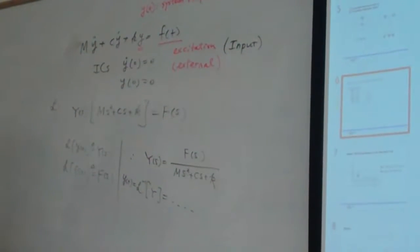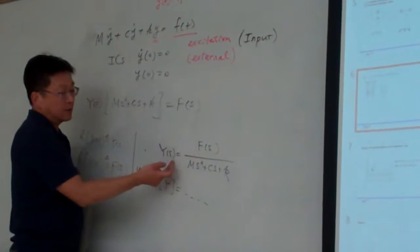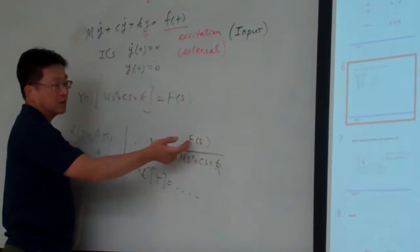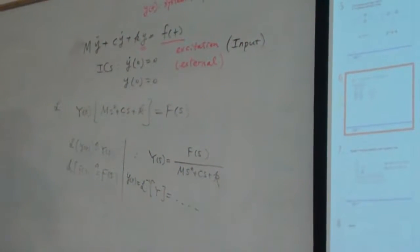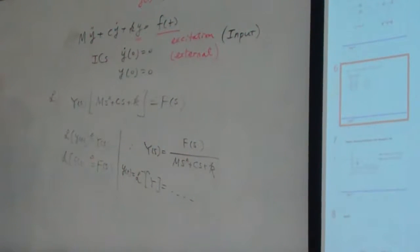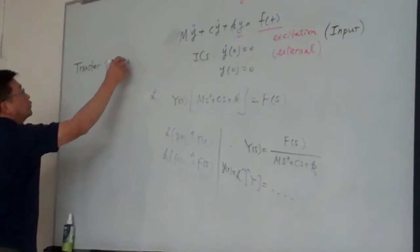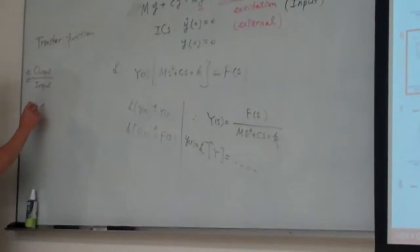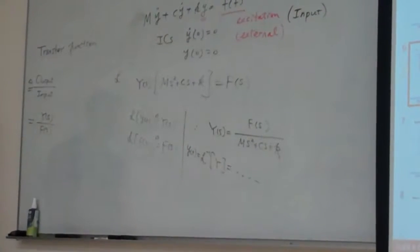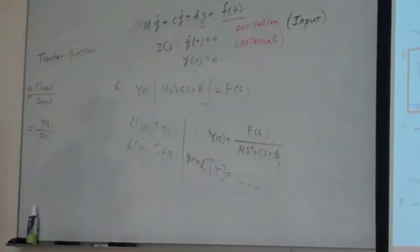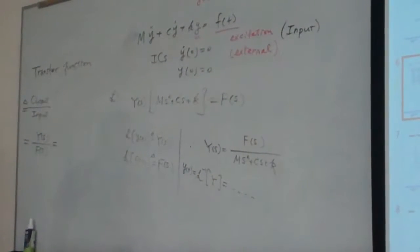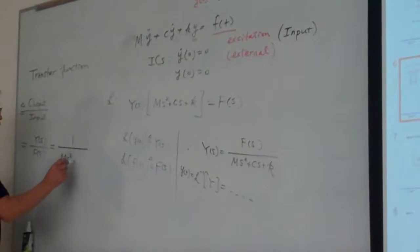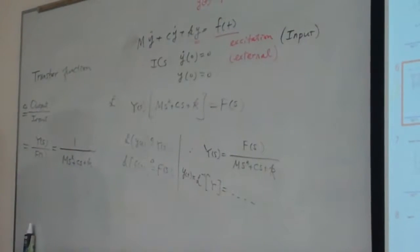From here you can see: this is the output, this is the input — the Laplace transform of the input and output. In control, we have the particular term called the transfer function. The transfer function is defined by the output over input. That definition is the ratio between the output and input. For this example, that is Y of S divided by F of S, which is defined as the transfer function of this dynamic system.